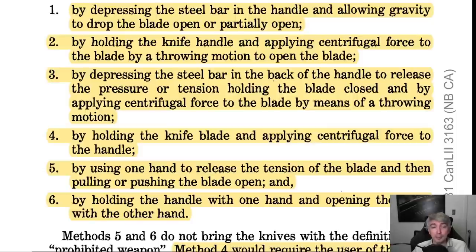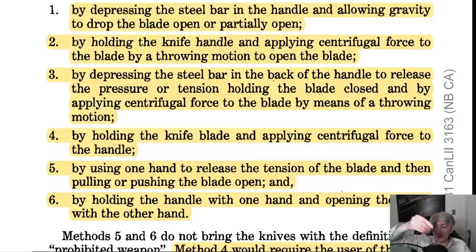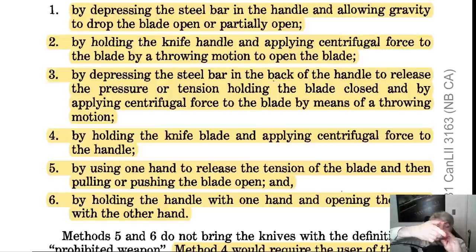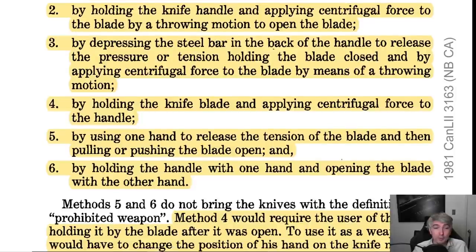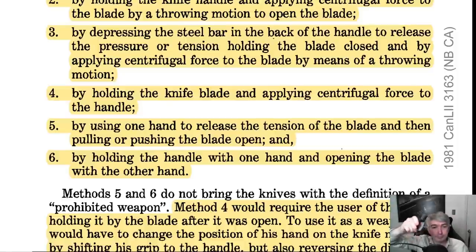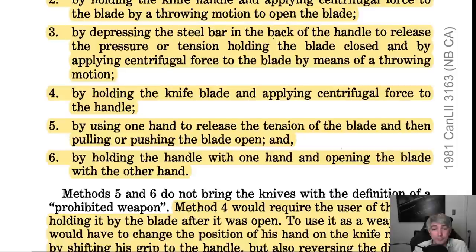Method four: by holding the knife blade and applying centrifugal force to the handle. Method five: by using one hand to release the tension and then pushing or pulling the blade open. Method six: by holding the handle with one hand and opening the blade with the other hand. Methods five and six do not bring the knives within the definition of a prohibited weapon.